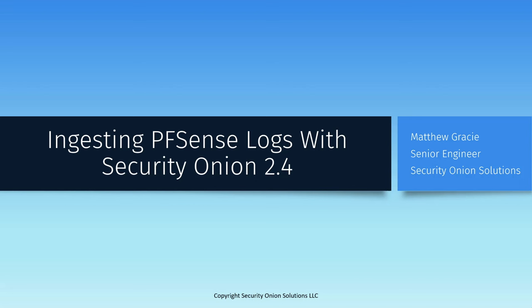The first thing that we will do is enable the Elastic integration for PFSense, so that the agent installed on our Security Onion standalone server will listen for incoming traffic from our PFSense firewall. Then we will update the host firewall configuration on our Security Onion server in order to accept that traffic. Finally, we'll configure PFSense to send the logs that we're interested in on the custom port that we've configured, and check Hunt to make sure that they're being properly received. Let's get started.